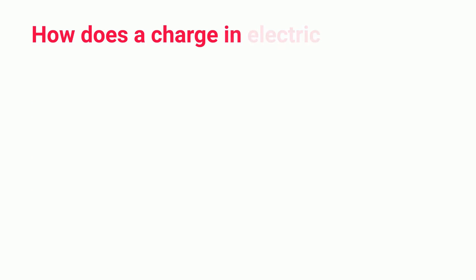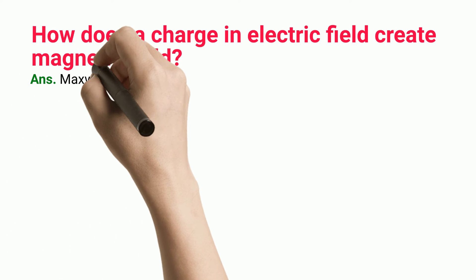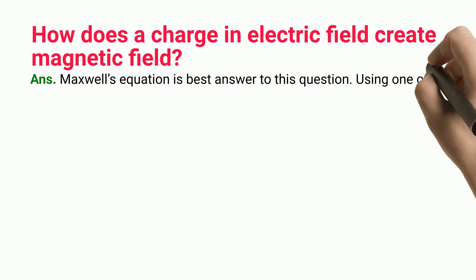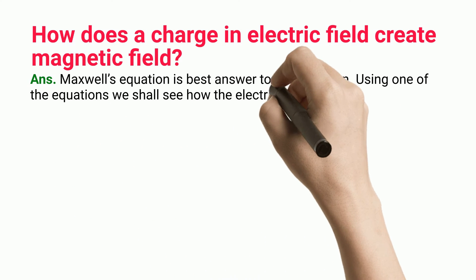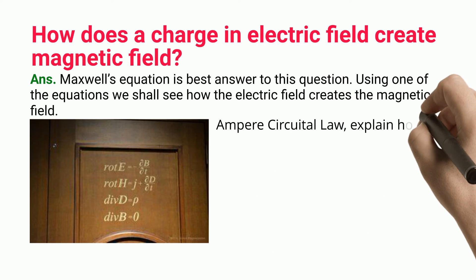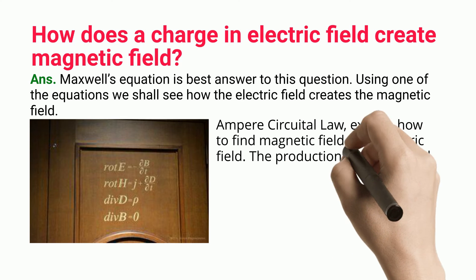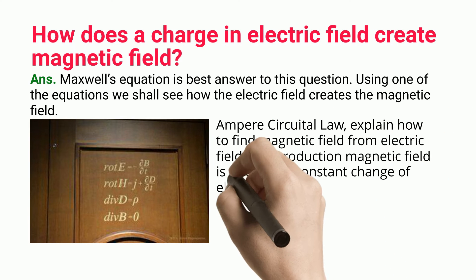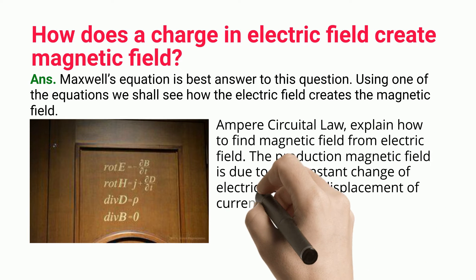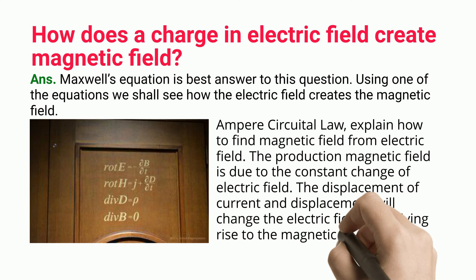Frequently asked question: How does a charge in an electric field create a magnetic field? Maxwell's equations best answer this question. Using one of the equations, we see how the electric field creates the magnetic field. Ampere's circuital law explains how to find magnetic field from electric field — the production of magnetic field is due to the constant change of electric field, and the displacement current causes the electric field to change, giving rise to the magnetic field.